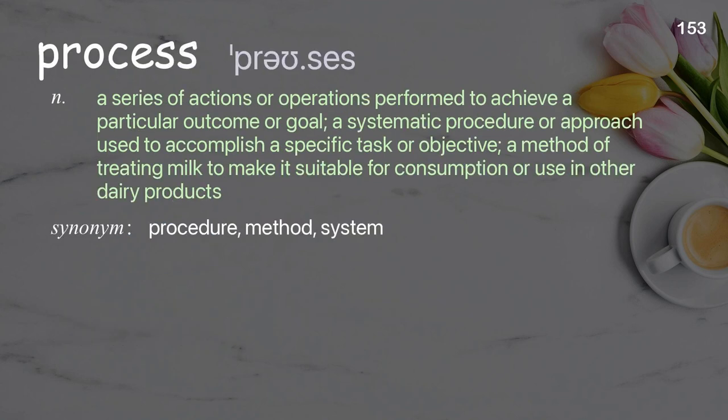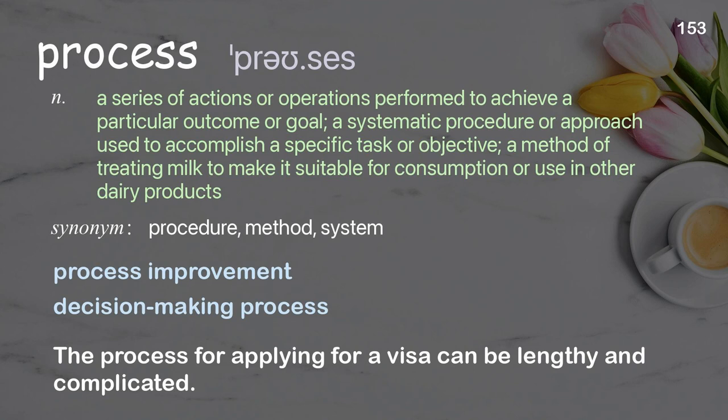Process: a series of actions or operations performed to achieve a particular outcome or goal; a systematic procedure or approach used to accomplish a specific task or objective; a method of treating milk to make it suitable for consumption or use in other dairy products. Examples: process improvement; decision-making process; the process for applying for a visa can be lengthy and complicated.